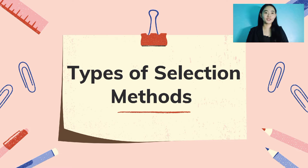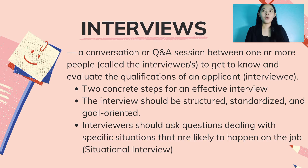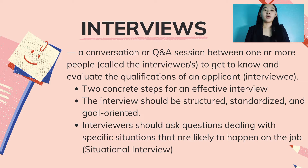For the continuation of Lesson 4, I'll be discussing Topic 2: Types of Selection Methods Used in Organizations and Companies. First, Interviews — these are conversations or Q&A sessions between one or more people to evaluate the qualifications of an applicant. There are two concrete steps for an effective interview. First, the interview should be structured, standardized, and goal-oriented, meaning the questions should be straight to the point and answer what the employers need to know.